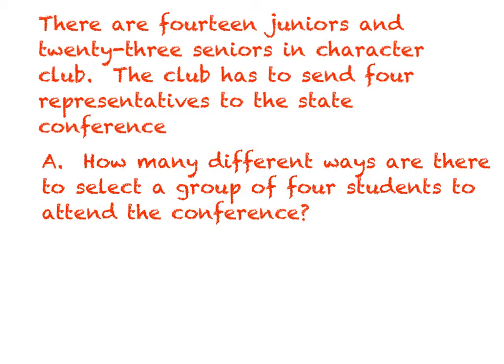All right, there are 14 juniors and 23 seniors in Character Club. The club has to send four representatives to the state conference. Question A, in how many different ways are there to select a group of four students to attend the conference? So first of all, permutation or combination? You are just going to select four students. I'm not being specific. I didn't say I need a president, a vice president, a treasurer, or secretary. I just need you to pick any four students. So first and foremost, this is a combination.